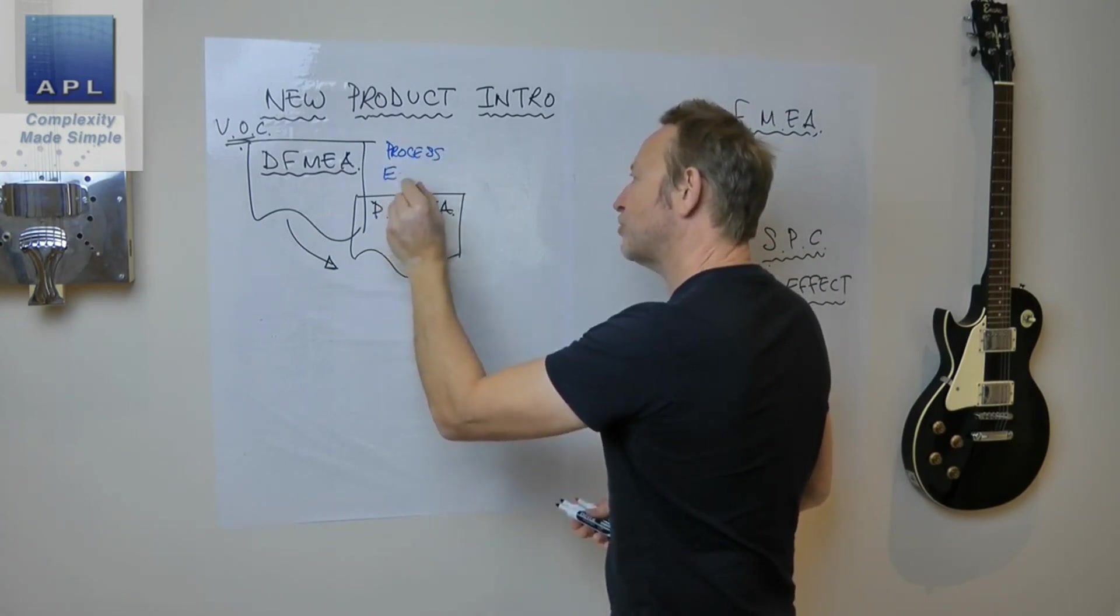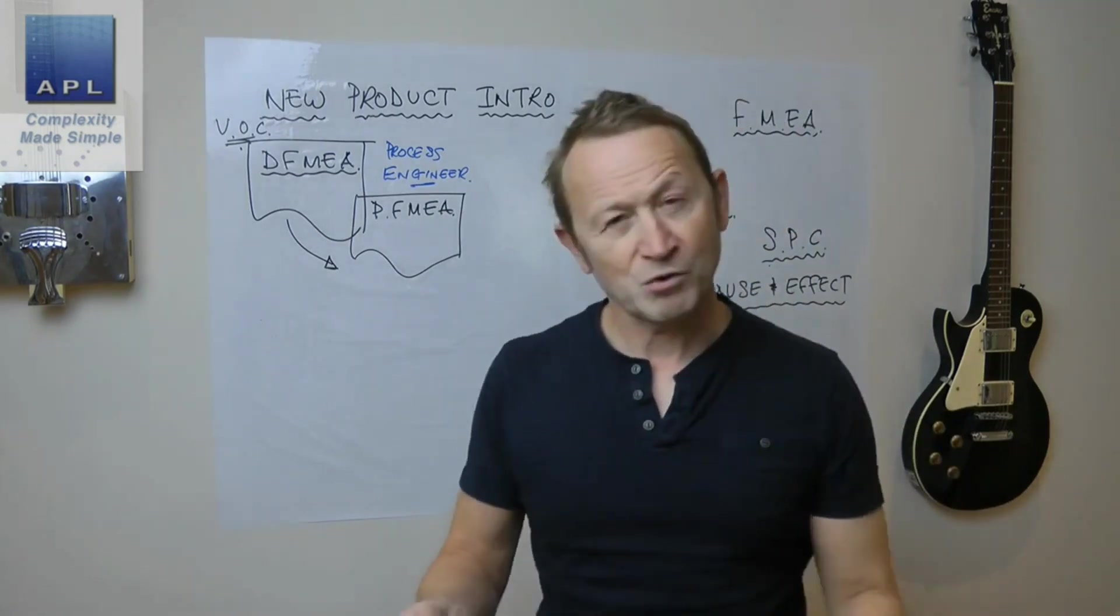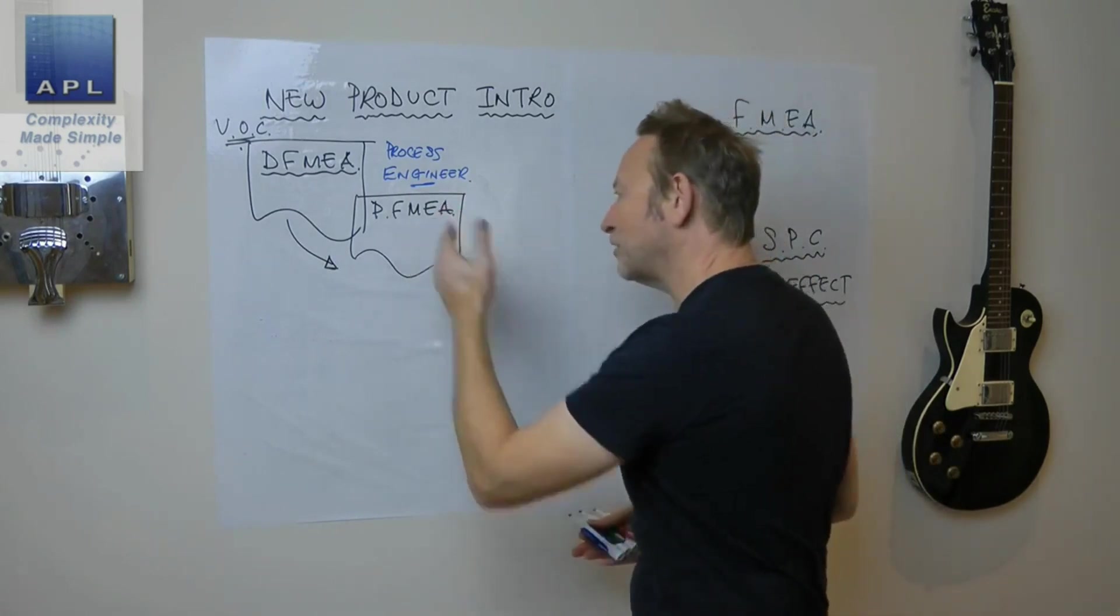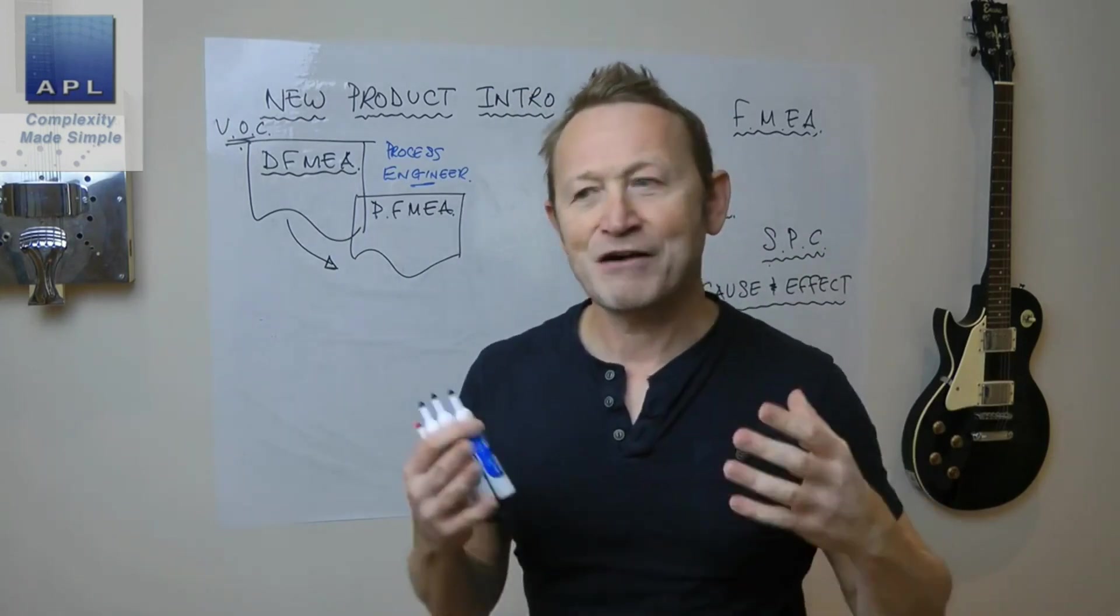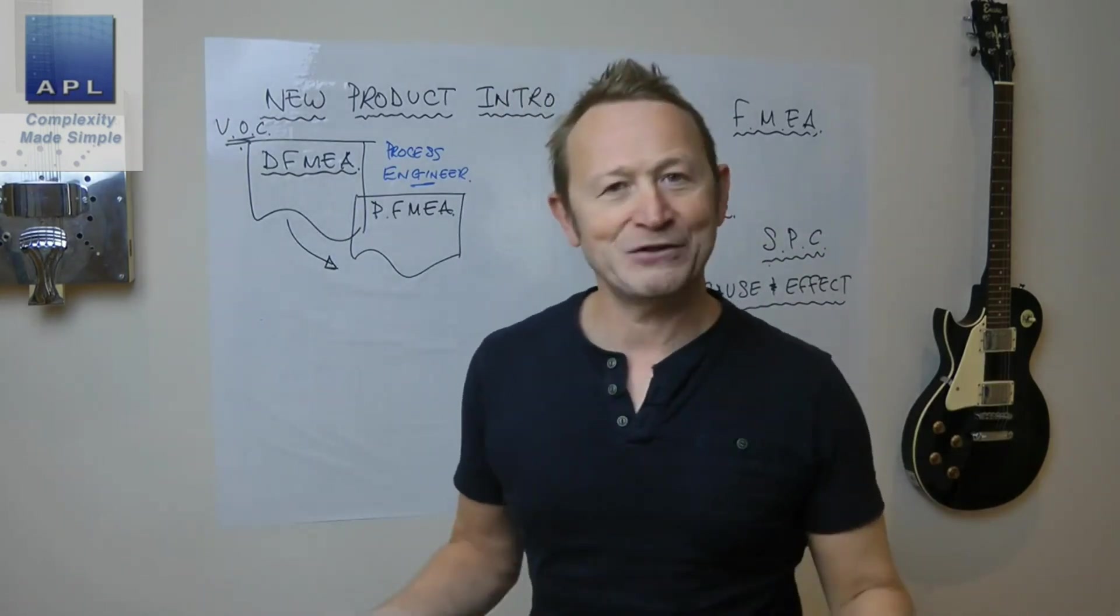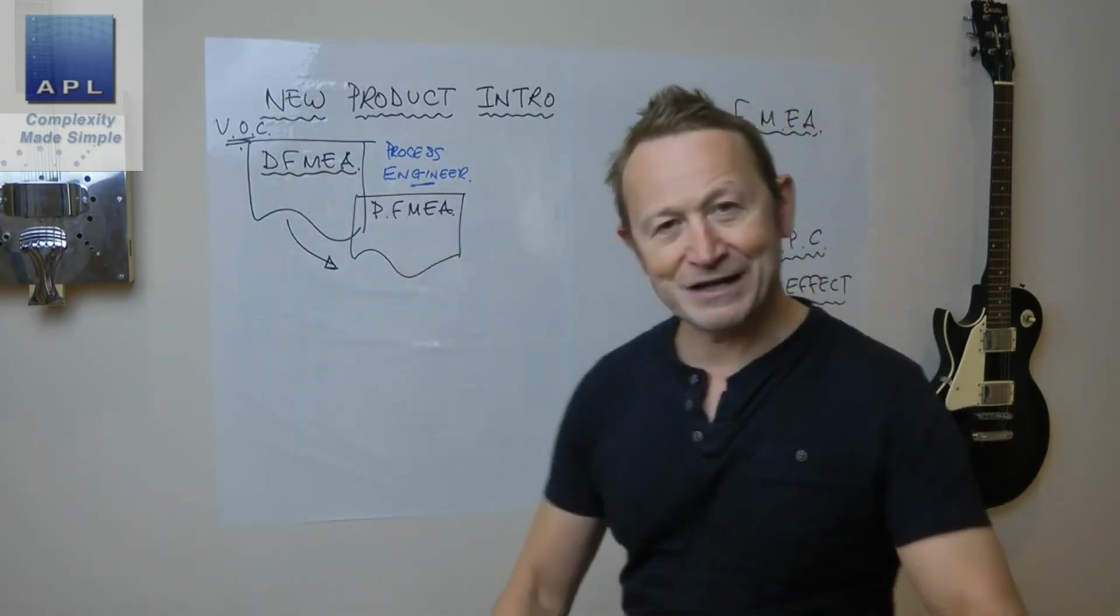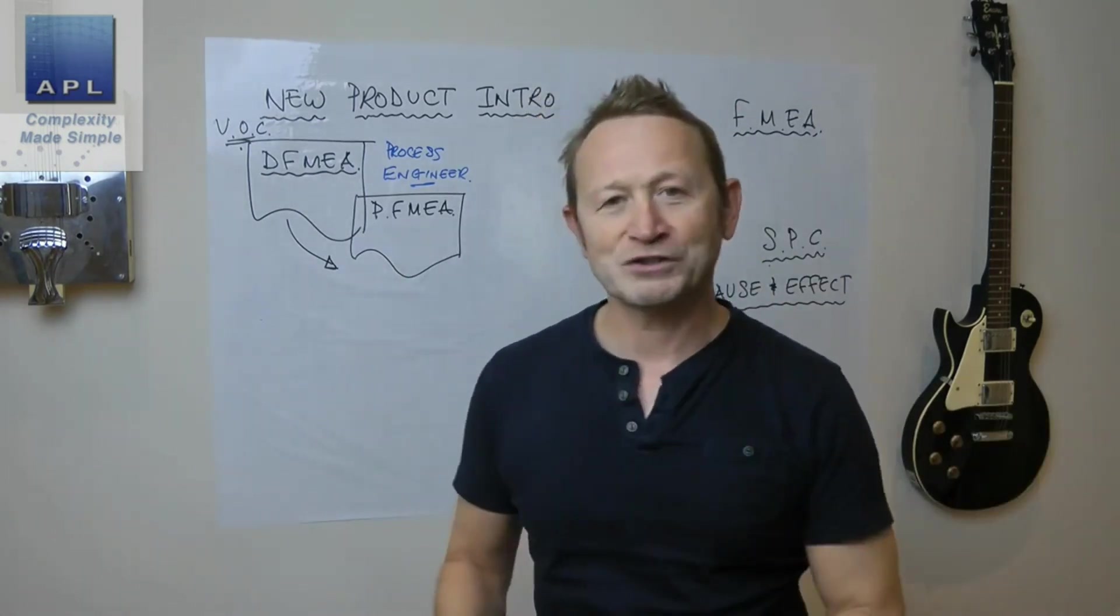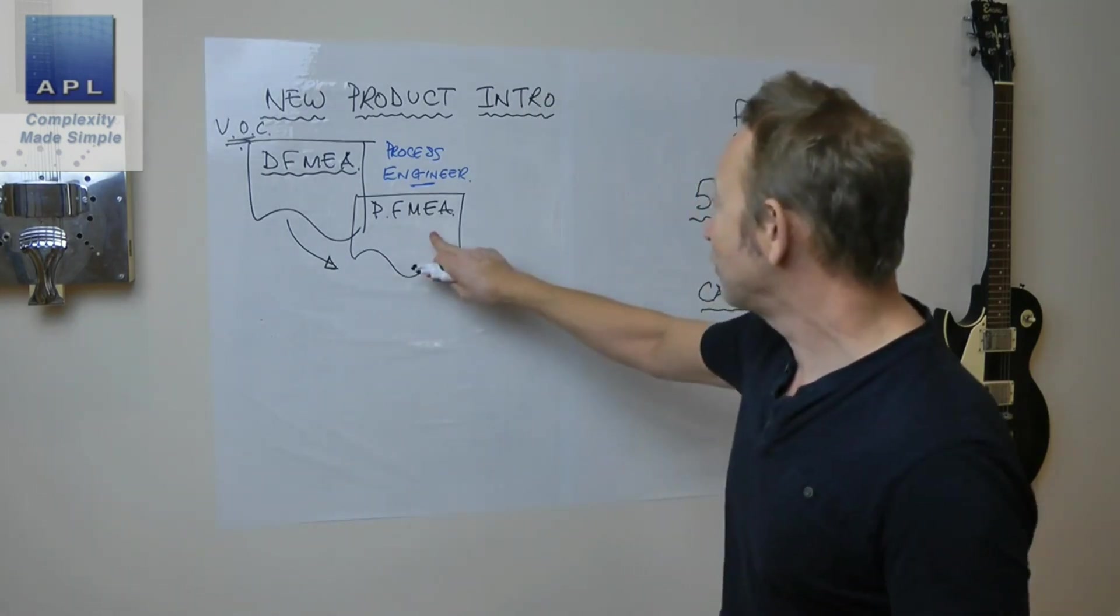The designer's thought process then passes all the information like tolerances, surface finishes, and things like that into the process FMEA. Now this is the working document of the process engineer. The process engineer has to design the process, decide what machine is going to be used and what controls are going to be put in place. How does he do this? You should do it with the process FMEA. The process FMEA isn't just a list of extreme events that may or may not happen. The process FMEA is supposed to take you through every step of the process and ask you what could go wrong and how you're going to control it.